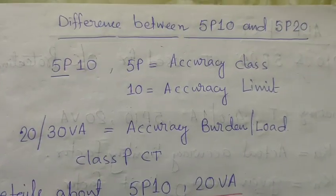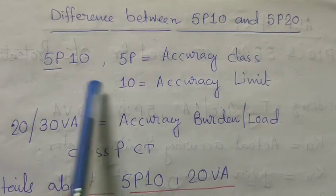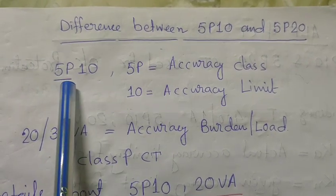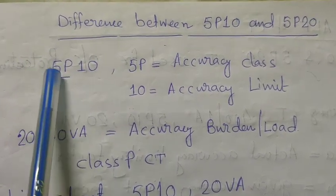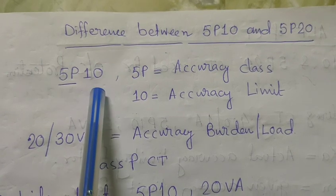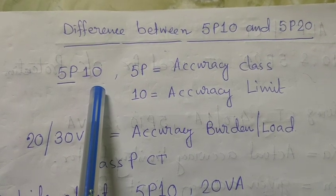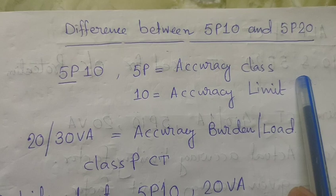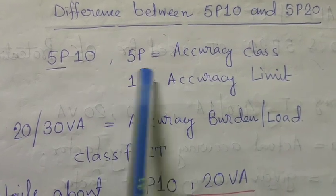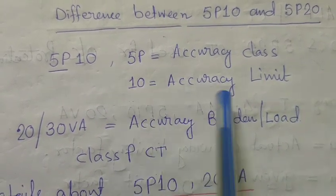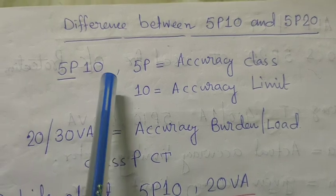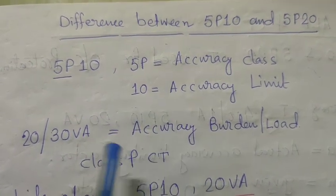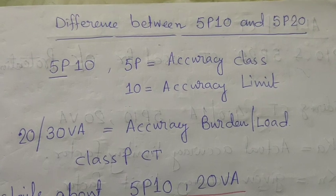So what is 5P10? Here, 5P is the accuracy class: P is the protection, 5 is the accuracy, and 10 is the accuracy limit factor. So clearly, 5P is the accuracy class, 10 is the accuracy limit, and the secondary of the CT also has a burden.